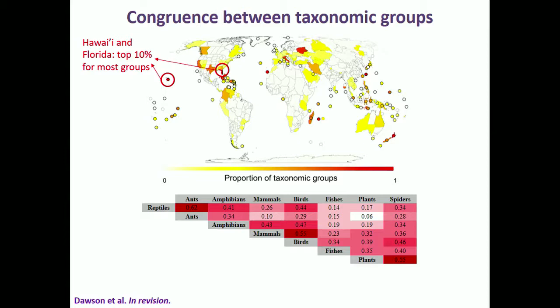These pairwise correlations might point toward common drivers, but in general, compared to native species, they aren't very strong. This suggests that taxonomic groups vary in their species richness patterns and in the potential drivers behind them.